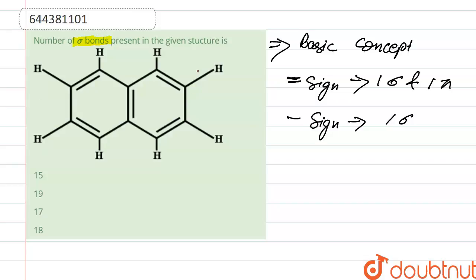That is here: 1, 2, 3, 4, 5, 6, 7, 8, 9, 10, 11, 12, 13, 14, 15, 16, 17, 18, and 1 here, 19. So total 19 sigma bonds